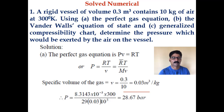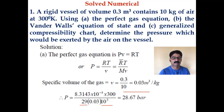Substituting the values, P comes out as 28.67 bar. The factor of 10⁵ in the denominator converts pressure from Pascal to bar. The molecular weight of air is approximately 29, and this gives us the characteristic gas constant and the final pressure value.